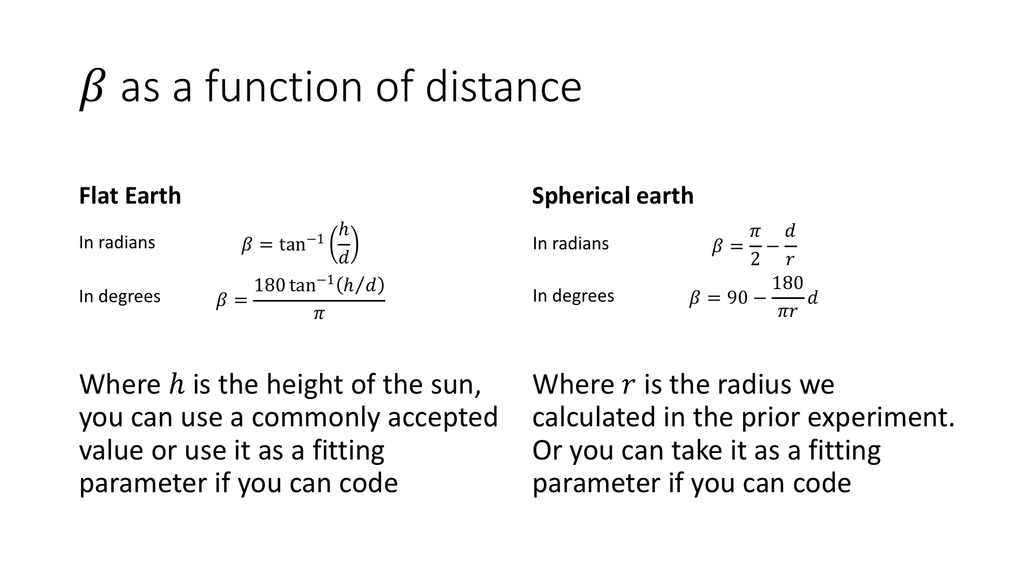You will need to multiply this by 180 over pi if you're working in degrees. You can take an accepted value for h from the flat earth community or use it as a fitting parameter if you know how to code. If the earth is spherical, beta takes the form of pi over 2 minus d over r if you're working in radians, or 90 minus d over r multiplied by 180 over pi if you're working in degrees. R is the radius of the earth, but if you know how to code you can treat this as an arbitrary fitting parameter.